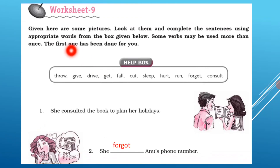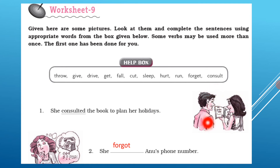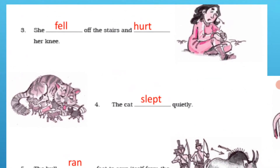Worksheet 9. Given here are some pictures. Look at them and complete the sentences using appropriate words from the box given below. Some verbs may be used more than once. The first one has been done for you. Here we have the words from the box, and the pictures and sentences have been given. She consulted the book to plan her holidays — this lady is consulting with this man using a book. She forgot the phone number — 'forget', 'forgot'. She fell off the stairs and hurt her knees.